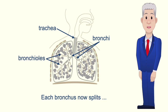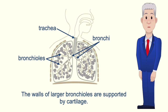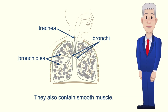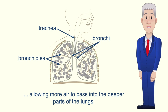Each bronchus splits, forming progressively narrower airways called bronchioles. The walls of larger bronchioles are supported by cartilage, and they also contain smooth muscle. When the smooth muscle relaxes, the bronchioles widen, allowing more air to pass into the deeper parts of the lungs.